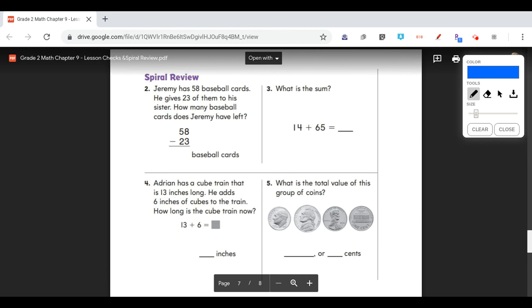It says, Jeremy has 58 baseball cards. He gives 23 of them to his sister. How many baseball cards does Jeremy have left? So we know that 58, 23, and how many he has left are important information in that problem. And if we want to know how many he has left, that means that we're going to be subtracting. So we have 58 minus 23. We start in our ones place. 8 minus 3, which equals 5. Then we have 5 minus 2, which equals 3. So Jeremy has 35 baseball cards left.